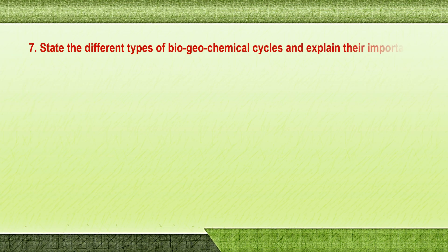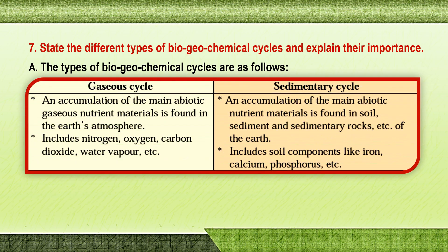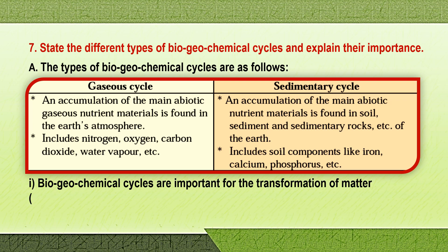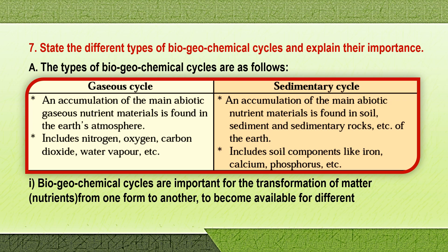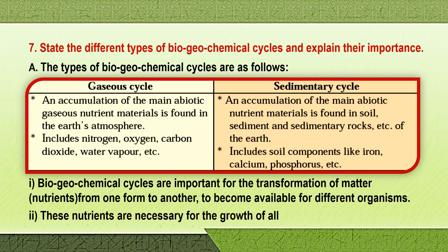Question seven: state the different types of biogeochemical cycles and explain their importance. The types are gaseous cycles and sedimentary cycles. A gaseous cycle is an accumulation of the main abiotic gaseous nutrient materials found in the earth's atmosphere — it includes nitrogen, oxygen, carbon dioxide, water vapor, etc. A sedimentary cycle involves an accumulation of the main abiotic nutrients found in soil, sediment, and rocks of the earth — it includes components like iron, calcium, phosphorus, etc. Biogeochemical cycles are important for the transformation of matter or nutrients from one form to another so that they become available for all organisms in the food chain. These nutrients are necessary for the growth of all organisms.